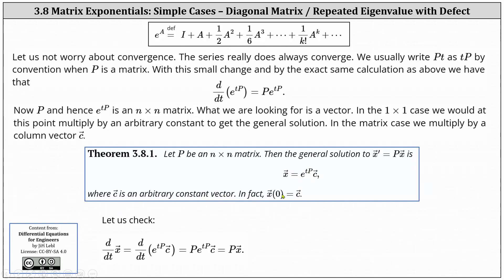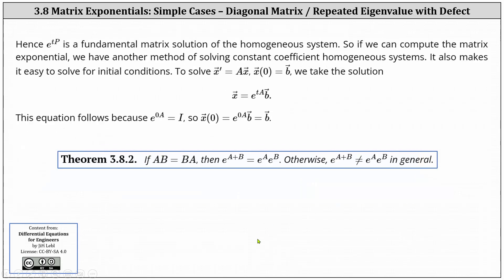In fact, x equals the constant vector c when t equals zero. And again, e to the power of tp is a matrix exponential. Of course, we can check this by differentiating, which is shown below. So the important part here is e to the power of tp is a fundamental matrix solution of the homogeneous system. So if we compute the matrix exponential, we have another method for solving constant coefficient homogeneous systems.